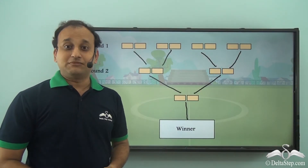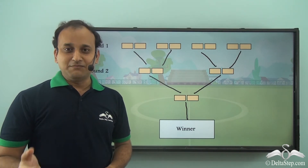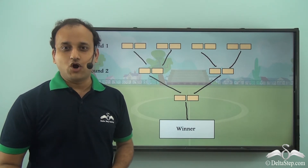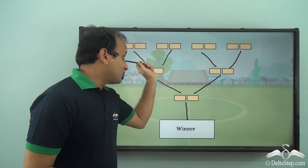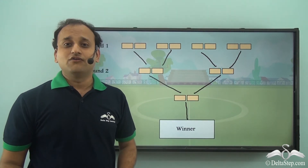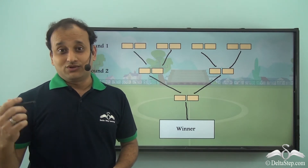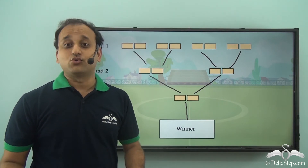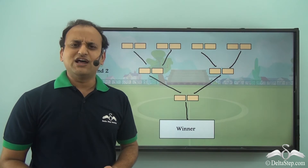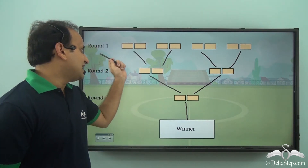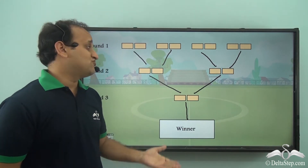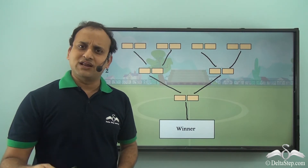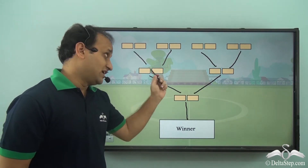Something unexpected happened — Samir got a total of 31 applications on his website, because many out-of-town teams had also applied. Along with his own school's team, he had a total of 32 teams for the competition. He was confused: he had calculated for eight teams, but for 32 teams he would have to make a fresh chart, and if applications kept increasing, he'd have to recalculate every time.